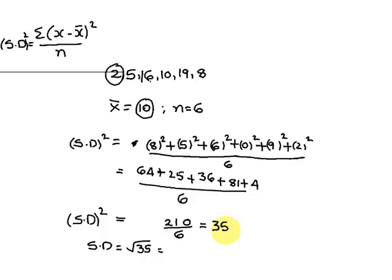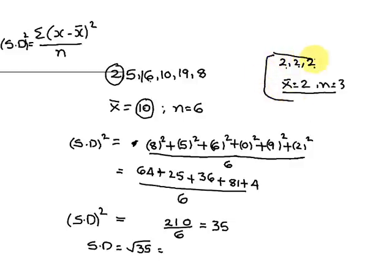To verify: for the dataset 2, 2, 2 (all equal), x̄ = 2 and n = 3. Calculating σ²: (2−2)² + (2−2)² + (2−2)² divided by 3 = 0/3 = 0. So the standard deviation is 0, confirming that when all numbers are equal, the standard deviation is zero. The standard deviation formula is applied using mean x̄ = 10 and n = 6 for our main example, giving σ = √35. Thank you.